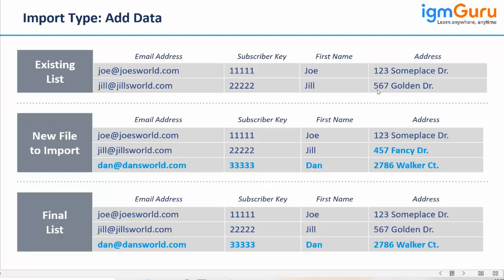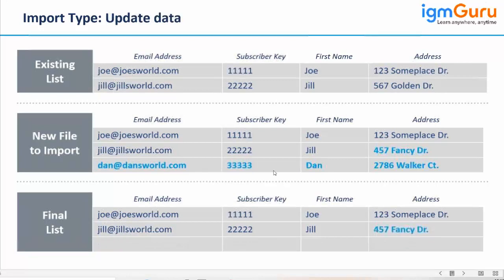Earlier the address of Jill was 567 Golden Drive — it is still 567 Golden Drive, but you wanted to update it to 457 Fancy Drive. Right? Yes sir, I got it. Now take the same scenario with the update type. If the import type is update, the address is updated but the new customer Dan is not added.